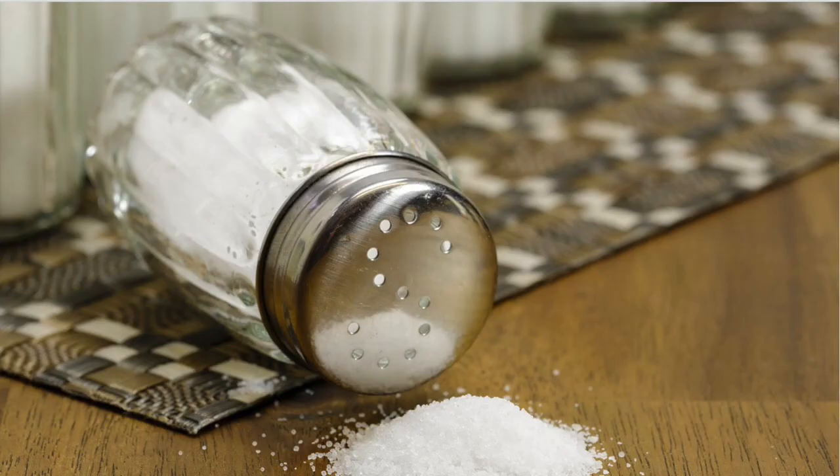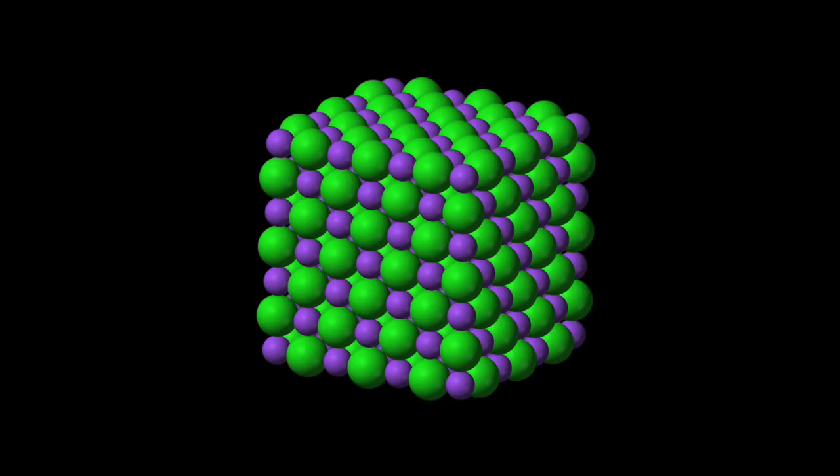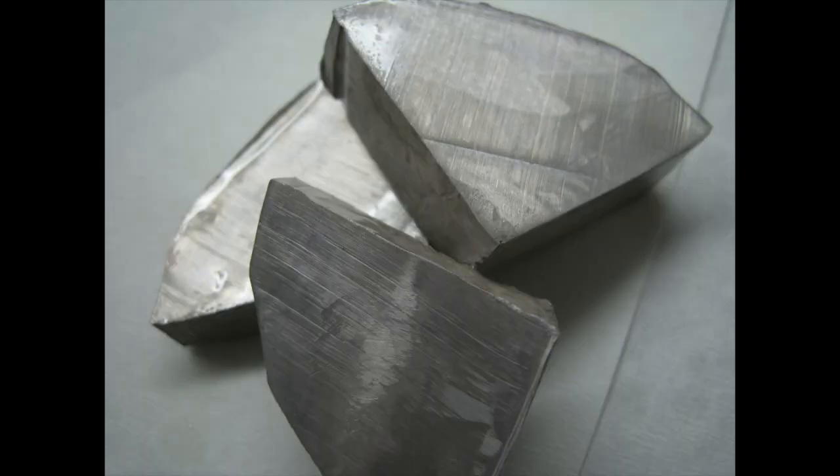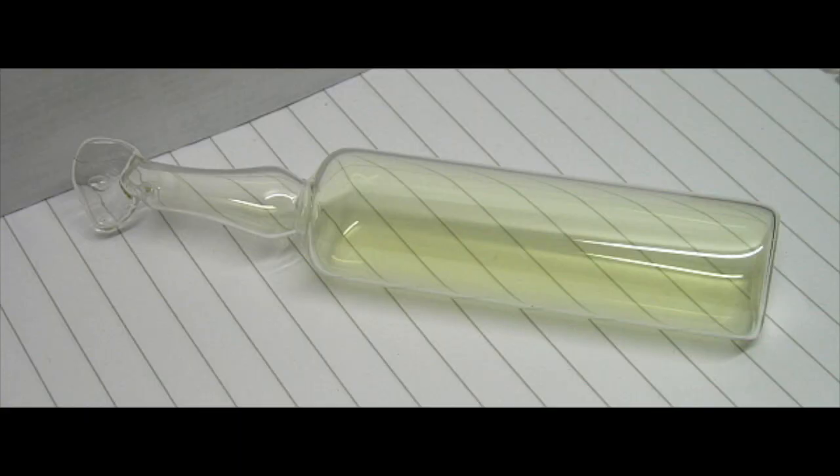Sodium chloride, also known as table salt, is made of sodium and chlorine atoms. However, it has very different properties from sodium, which is a soft, silver, very reactive metal, and chlorine, which is a very reactive gas.